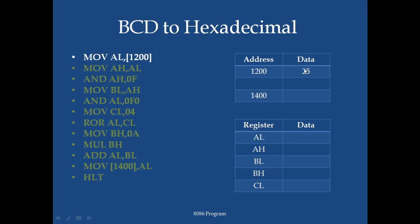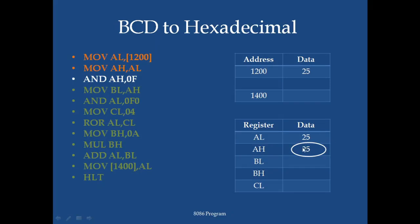The given input is 25 stored in location 1200. After execution of this instruction, AL is loaded with value 25. A copy is then stored into AH, because AL will be changed to a different value after subsequent operations.